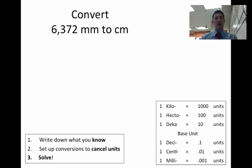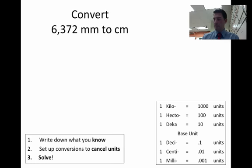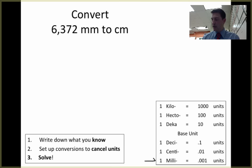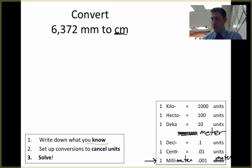Now, convert 6,372 millimeters to centimeters. This one's going to be a two-step problem because if we find milli down on the metric ladder, we can only convert between millimeter and meter — 1 millimeter is equal to 0.001 meters. But up here in the problem, I want my answer in centimeters, so let me show you what to do if this happens. It requires a little more work, but again, it's a foolproof method once you get it down. First thing: write down what you know. What we know is the one that has a number with it, which is 6,372 millimeters. Make sure you leave the units with it.